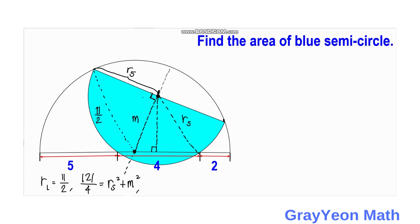Next, we need to focus on these two small right triangles. We can see that one of the legs is a common length shared by both triangles. Since it is common to both triangles, we can make an equation about these triangles.